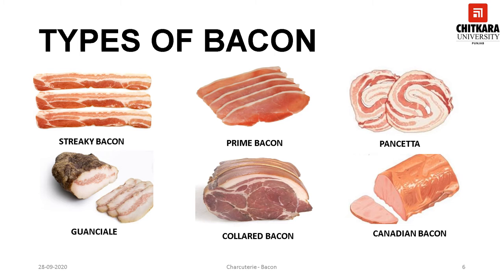Prime bacon contains some part of fatty belly and a larger part of loin. Next is pancetta. Pancetta is a type of Italian bacon that is prepared from a cured belly of pork. It is traditionally rolled and is available in the market as a roll or in dices.